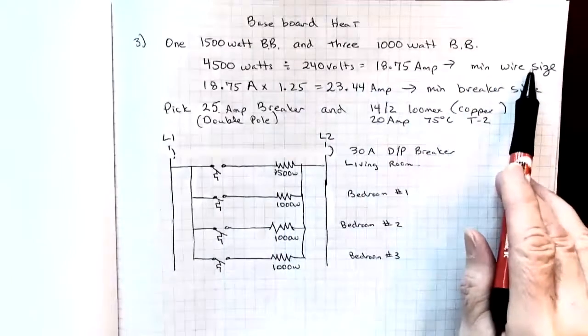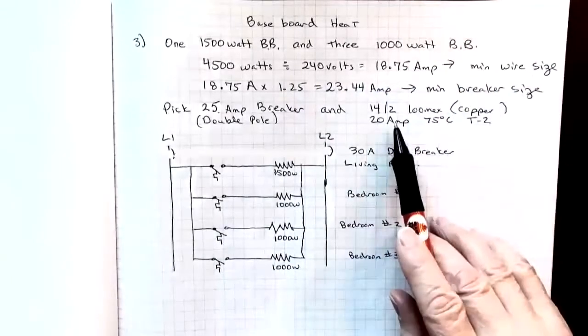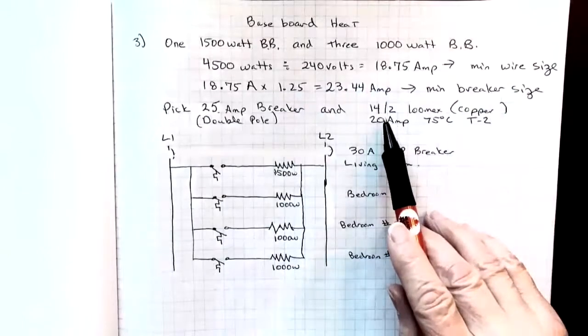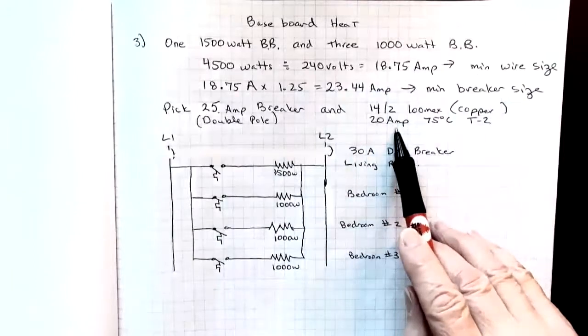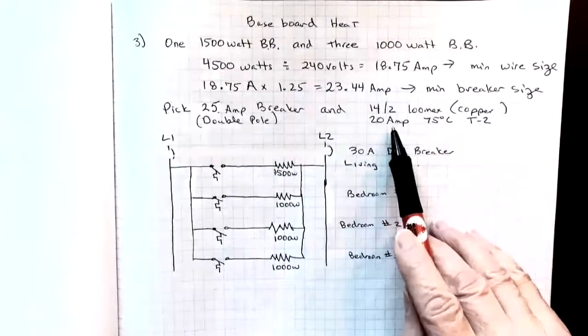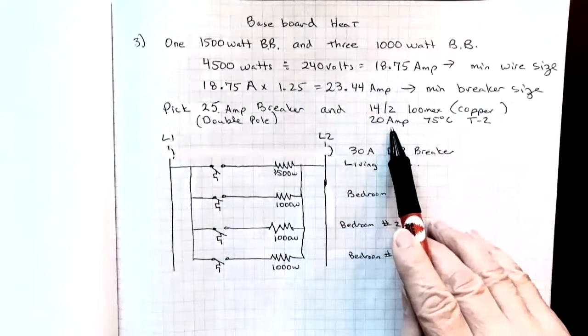Remember, the wire can be smaller than the breaker. So again, in table two, a 14-2 wire can easily carry that 18.75 because it's rated at 20 amps.